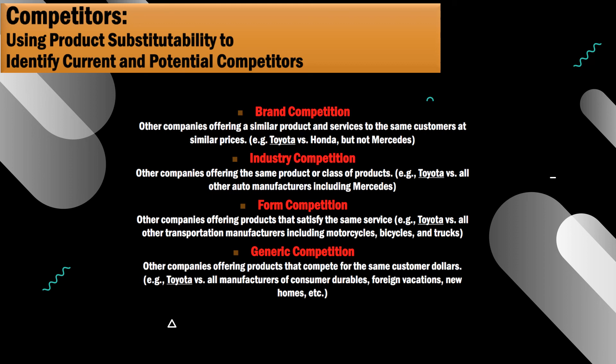We can look at the pizza industry for industry competition — this would be like Domino's competing with all other pizza restaurant chains. Form competition could be Old Navy competing with all other companies that sell clothing, like Victoria's Secret, Walmart, Gap, Nordstrom, Dillard's, and the list goes on.